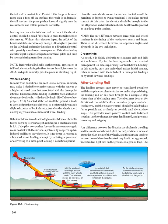It is highly desirable to eliminate crab and drift at touchdown. By far the best approach to crosswind management is a side-slip or wing-low touchdown. In this attitude, only one main wheel makes initial contact — either in concert with the tailwheel in three-point landings or by itself in wheel landings.